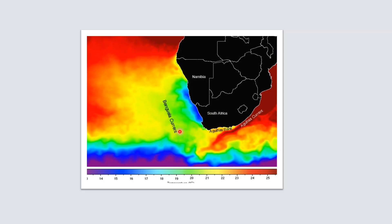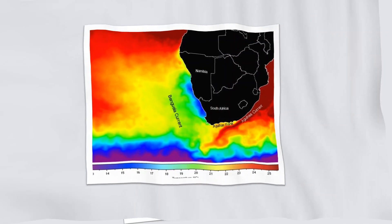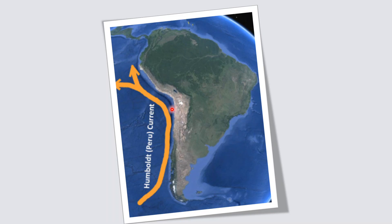Winds blowing over a cold current cannot pick up moisture and become dry. As a result, these areas experience a very dry climate and have turned into deserts. Along the western coast of South America, due to the presence of the cold Humboldt or Peruvian current, the Atacama Desert has formed — the driest desert in the world. Temperatures become very cold and winds blowing over here, even if they are onshore, do not bring rainfall because they become dry when they blow over a cold current.